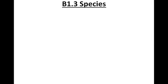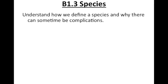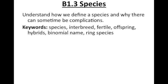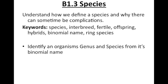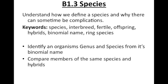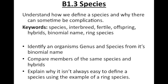This is lesson B1.3 on species. The objective is to define what a species is, and describe why this can sometimes be complicated. The keywords and outcomes are to identify organisms, genus and species from their binomial name, to compare members of the same species and hybrids, and explain why it isn't always easy to define what exactly a species is, using examples of ring species.